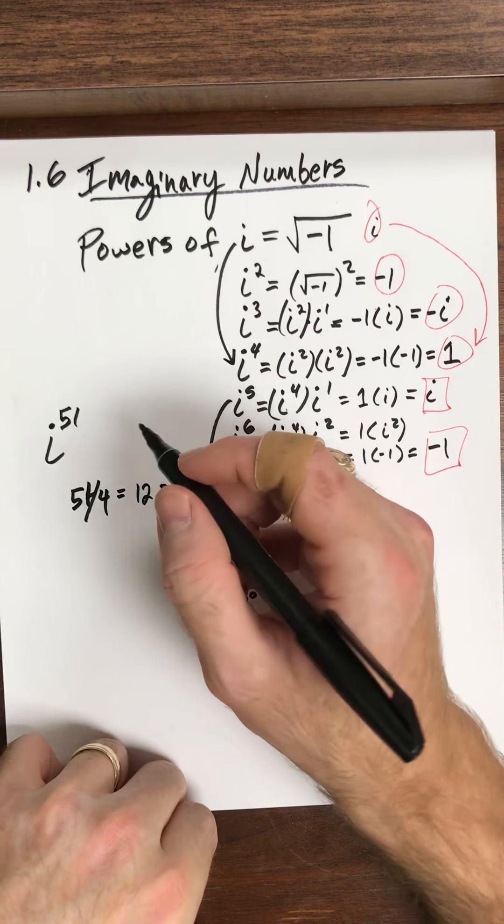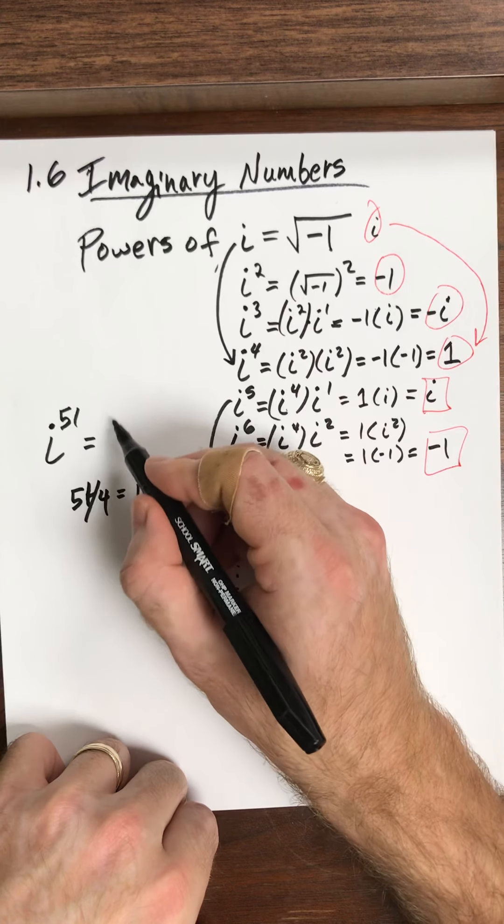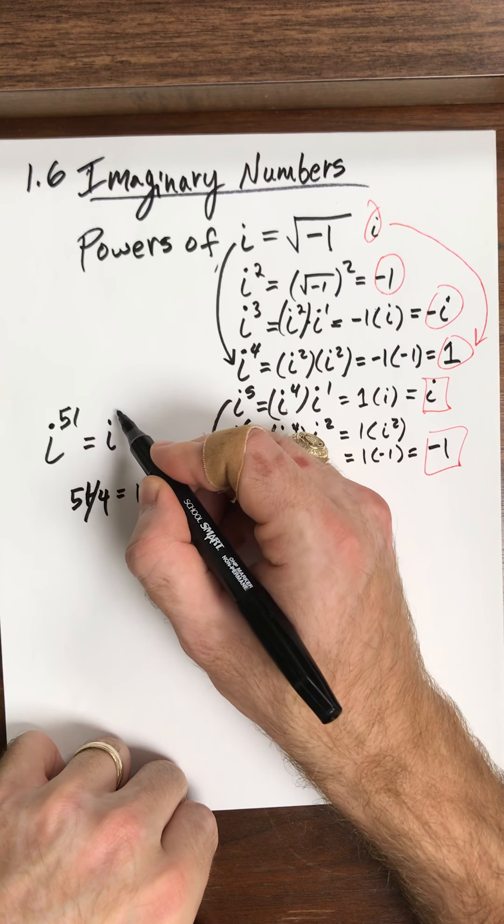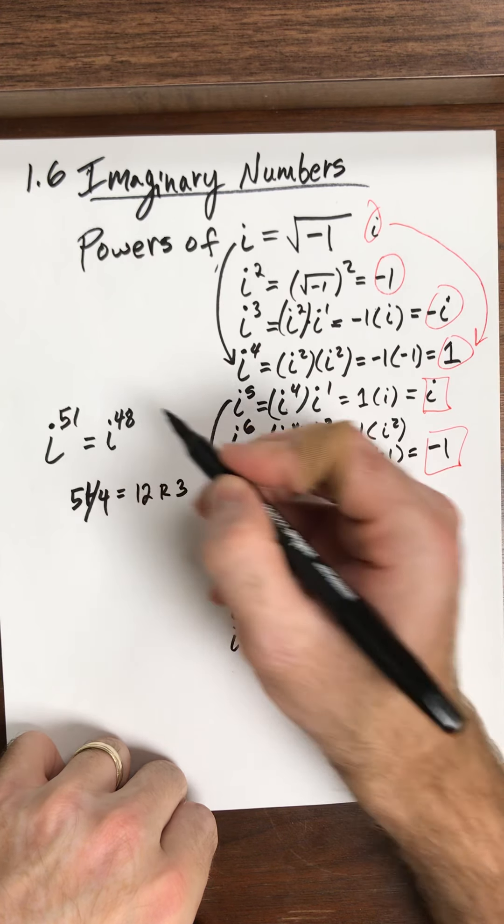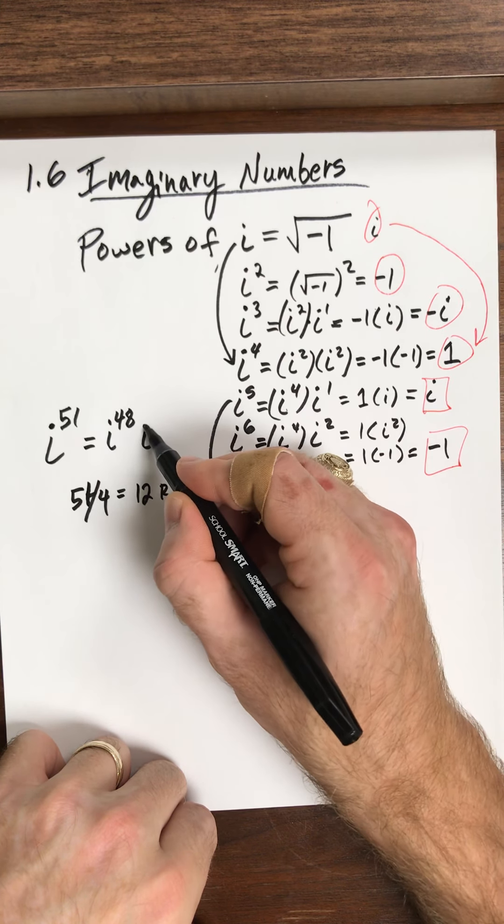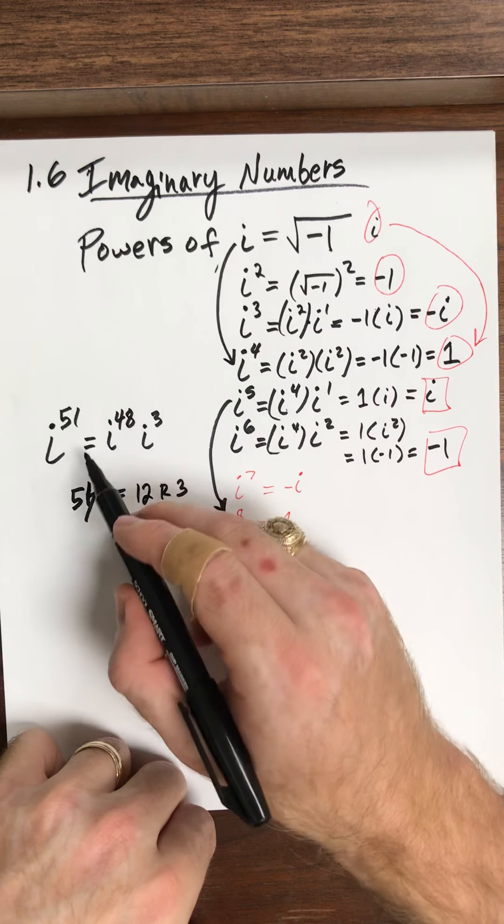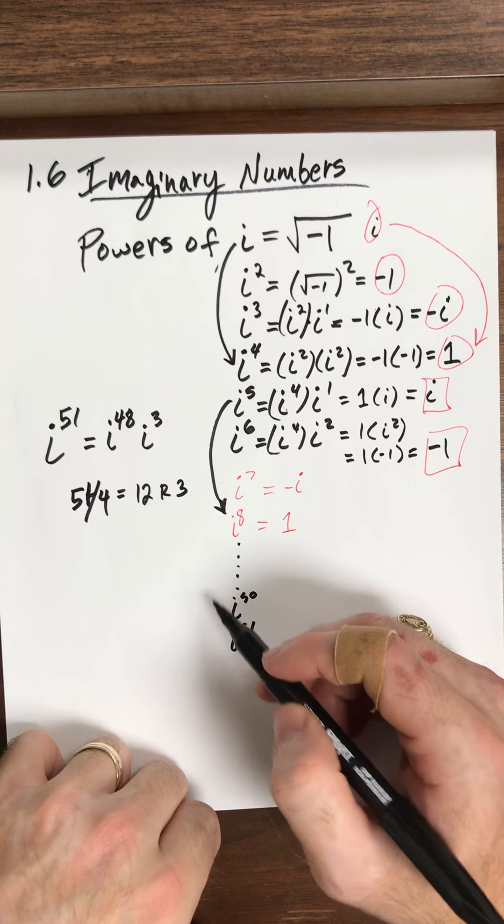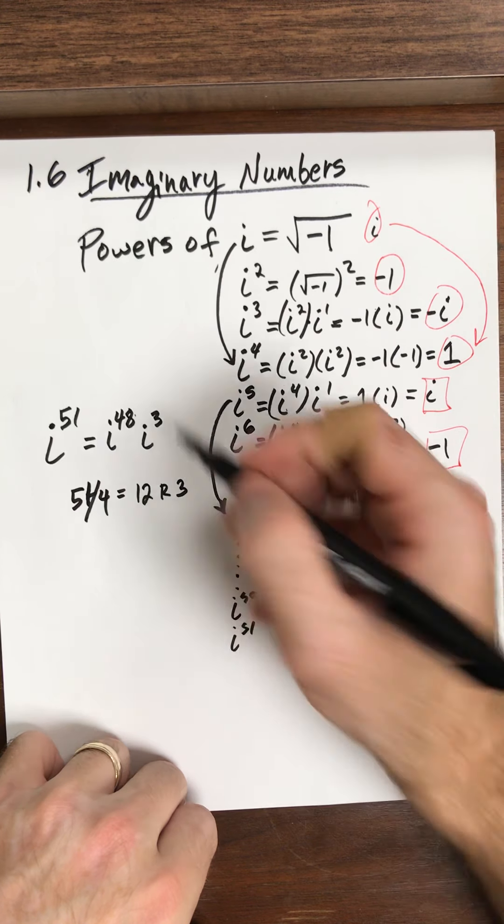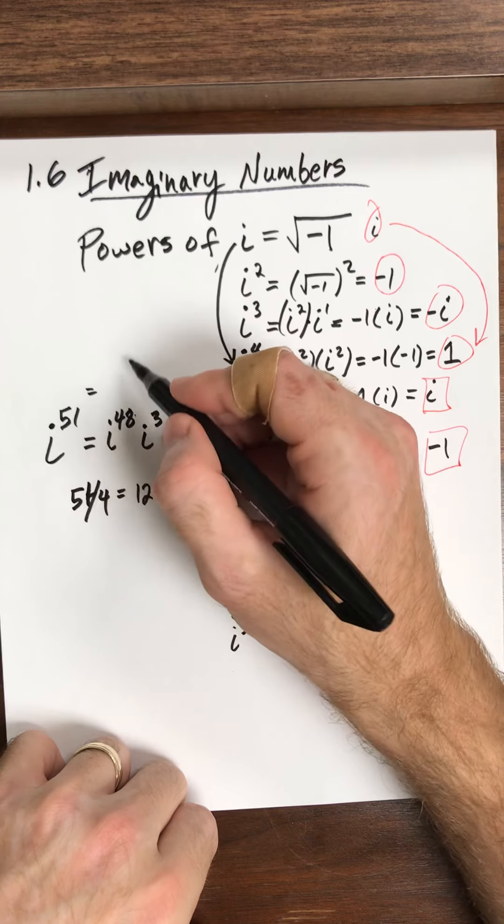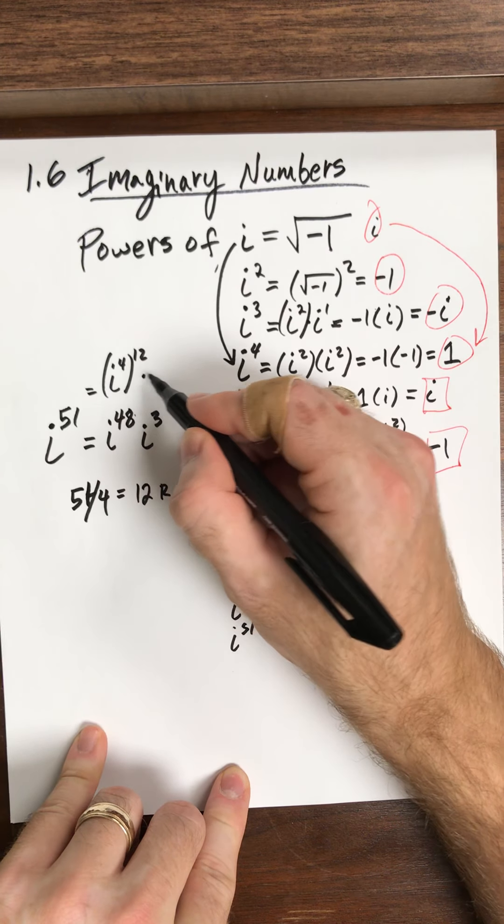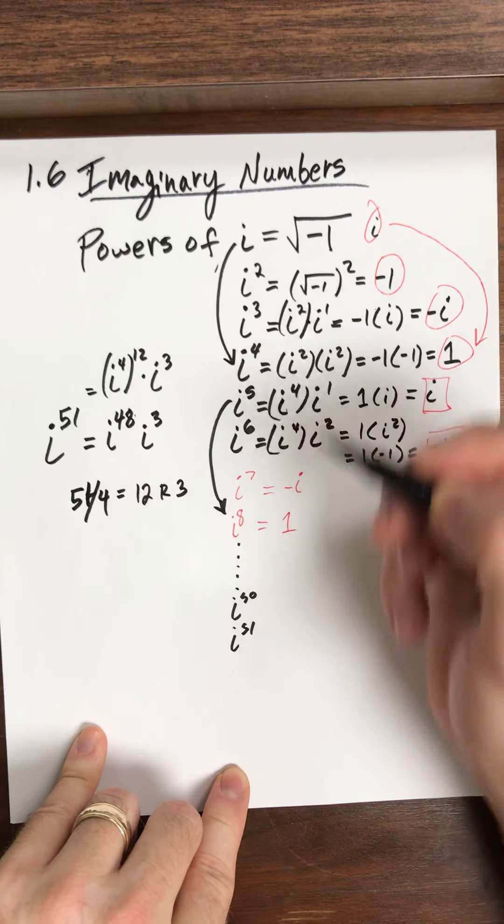All right. So what is this really? This is equal to i to the 48 and then remainder 3. So this i to the 48, I can rewrite that i to the 48. So this i to the 48, that's really 4 times 12. So when I divide here, I can rewrite this as i to the 4 to the 12 times i to the 3.